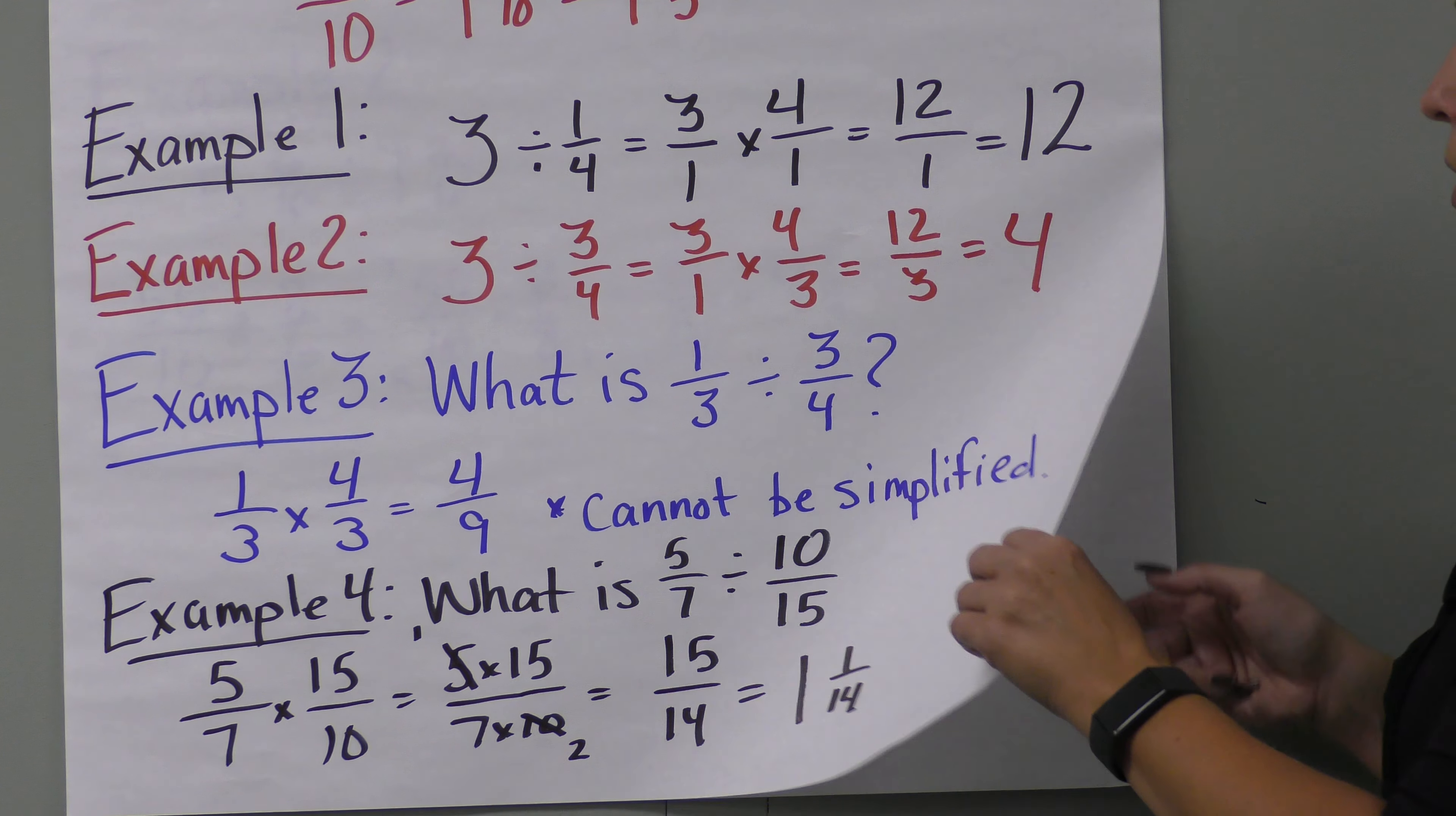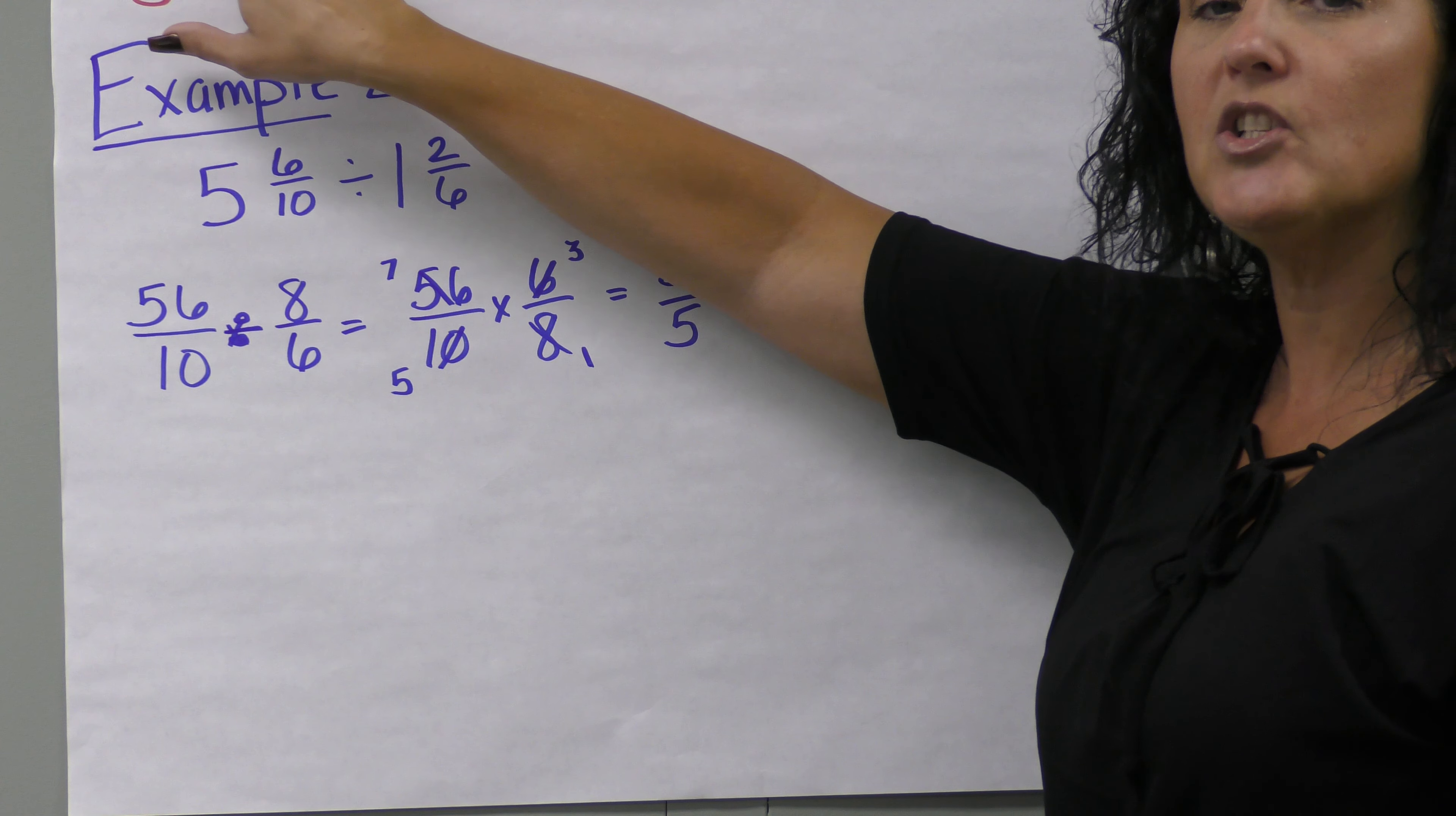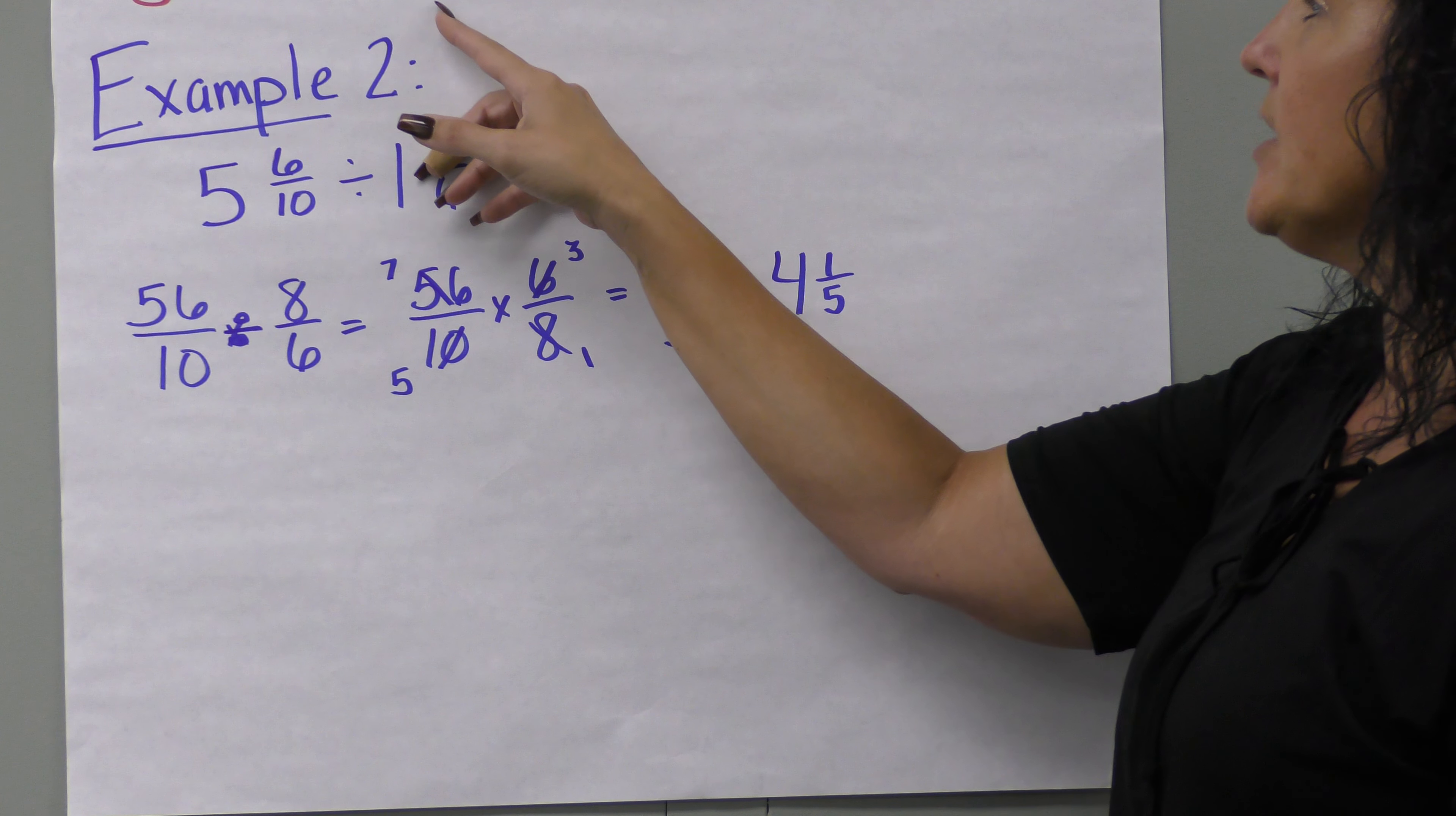Let's look at dividing mixed fractions. We have three and one-third divided by two and one-half. First, change these to improper fractions. Three times three is nine, plus one is ten, so ten-thirds. Two times two is four, plus one is five, so five-halves.